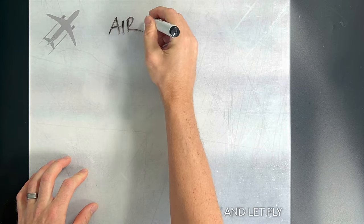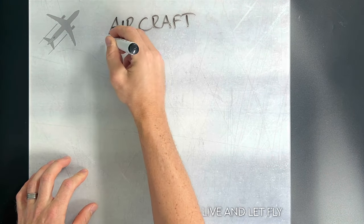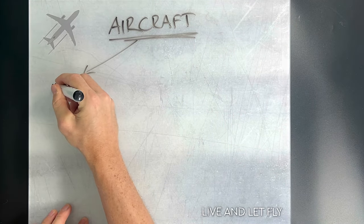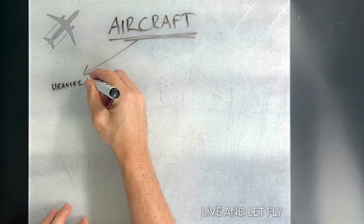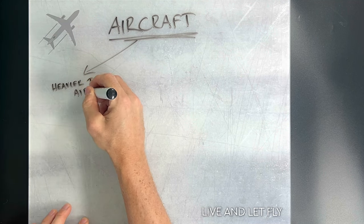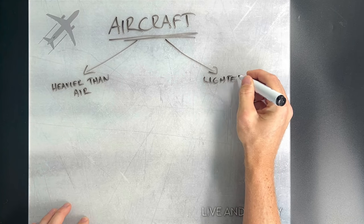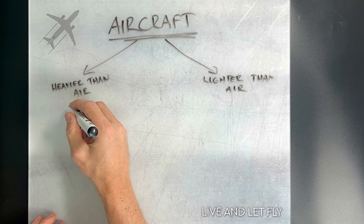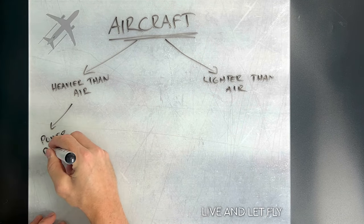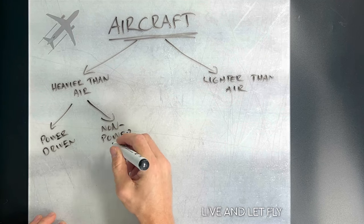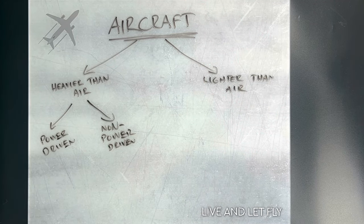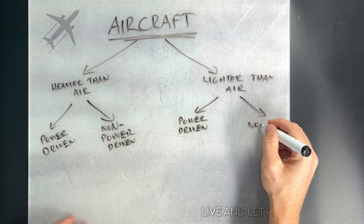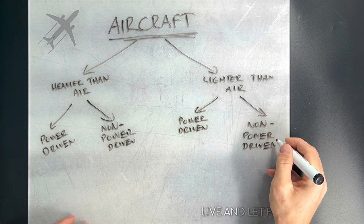An aircraft is simply any machine that can find support in the atmosphere from the reactions of the air, excluding support from the earth's surface. Every single aircraft can be divided into two main subcategories: those that are heavier than air and those that are lighter than air. Both subcategories are further divided into two sections based on whether they have some kind of engine or not — called non-power driven and power driven aircraft.